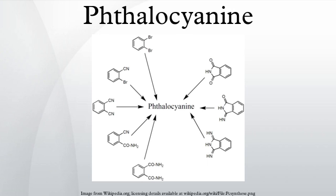Many phthalocyanine compounds are thermally very stable; they do not melt but can be sublimed. CuPc sublimes at greater than 500 degrees Celsius under inert gases. Substituted phthalocyanine complexes often have much higher solubility but are less thermally stable and often cannot be sublimed.